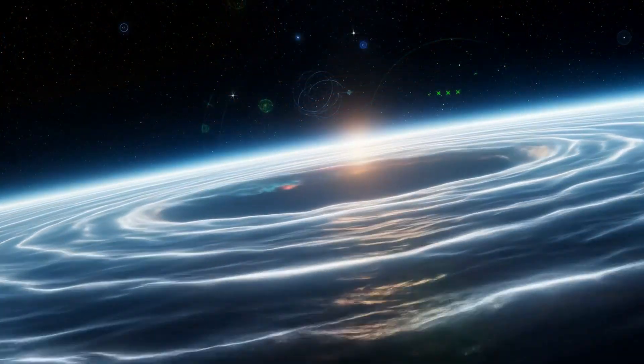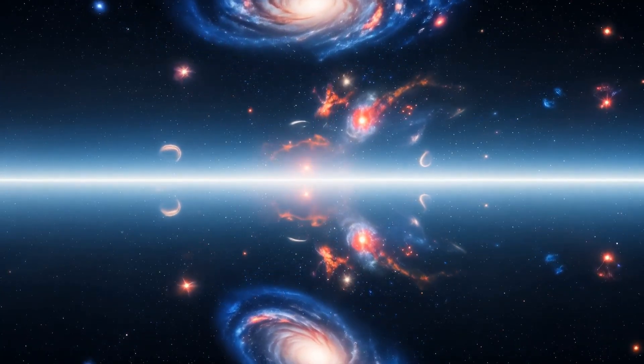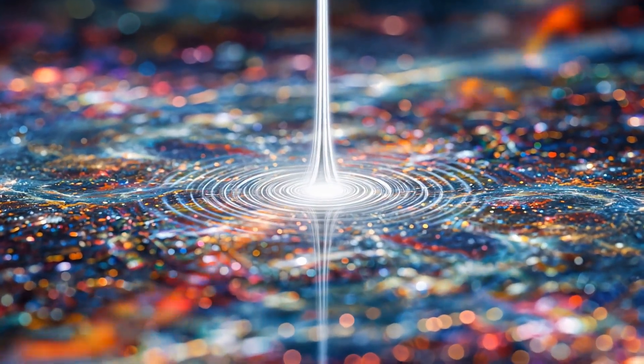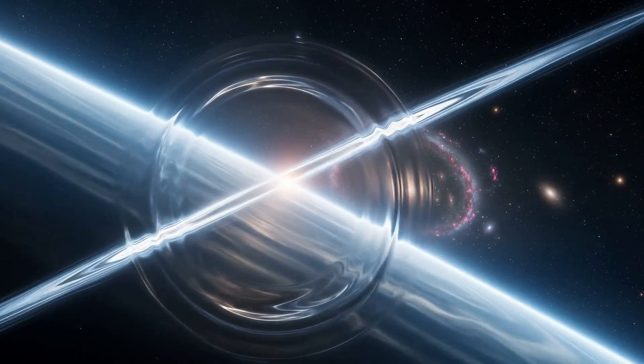What you call the event horizon is the surface where those states are projected. The singularity is the derivative, holding every possibility. The horizon is the integral, displaying them as reality. Together they form the mirror where existence is written.